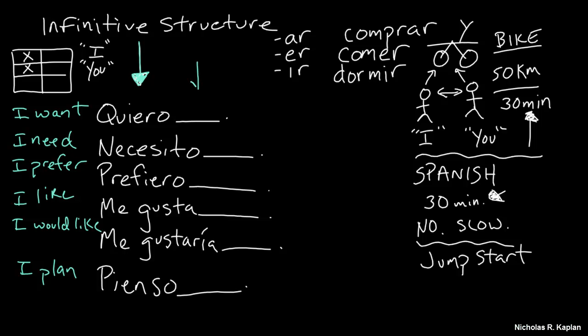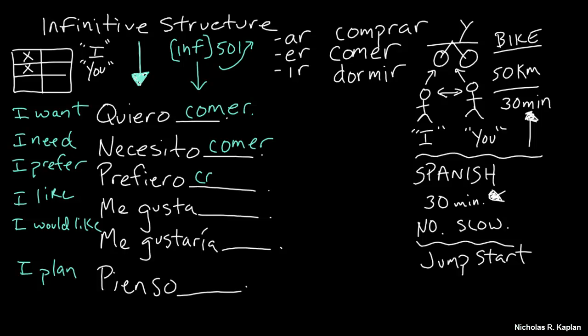And then, here, you're going to put in an infinitive. So you could go to the dictionary and look up an infinitive. You could go get the book 501 Verbs, which has 501 infinitives. I'll put a link up here. If you say, I want to eat, you're just going to say, quiero comer. I need to eat, necesito comer.